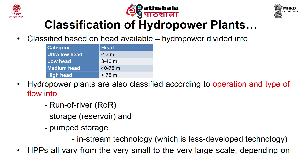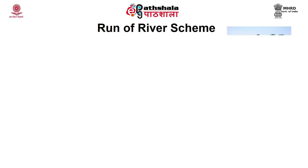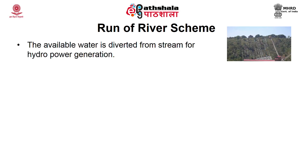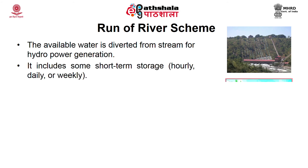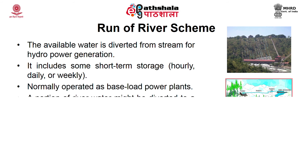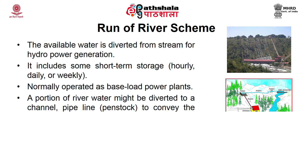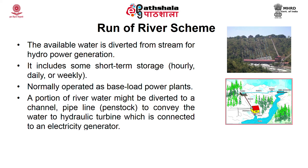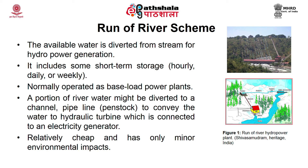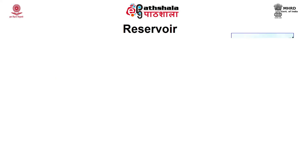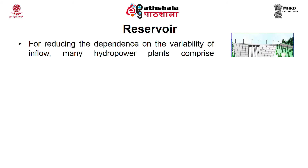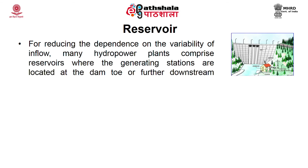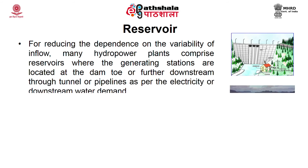Run-of-river schemes divert available water from a stream for hydropower generation, generally with some short-term storage (hourly, daily, or weekly) to adapt to demand. They are normally operated as base-load power plants. A portion of river water is diverted through a channel or penstock to a hydraulic turbine connected to a generator. Installation is relatively cheap with minor environmental impact. Reservoir-type plants use reservoirs to reduce dependence on inflow variability; generating stations are located at the dam toe or downstream through tunnels or pipelines, mainly in river valleys and often serving multiple purposes like irrigation, drinking water, and flood control.